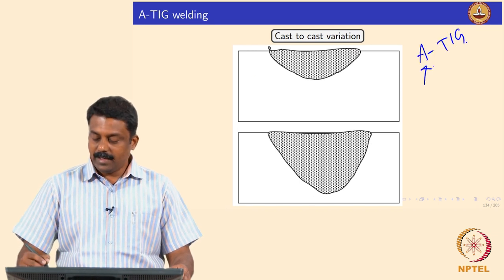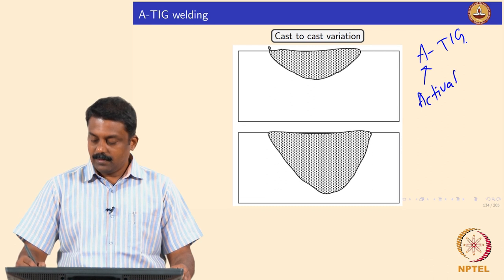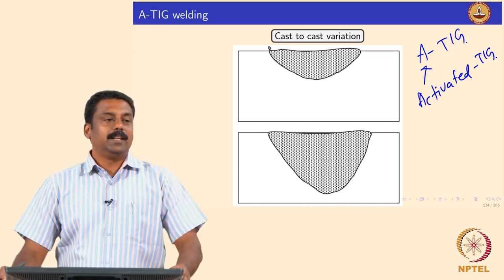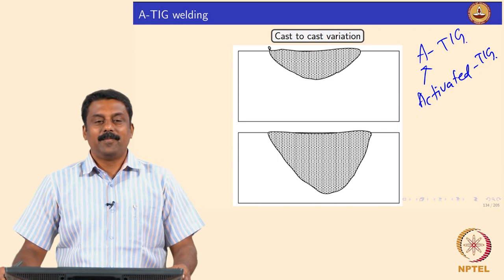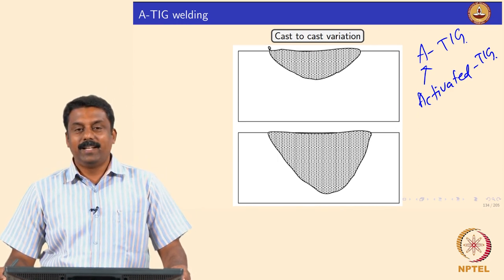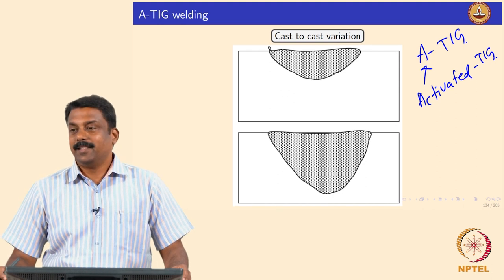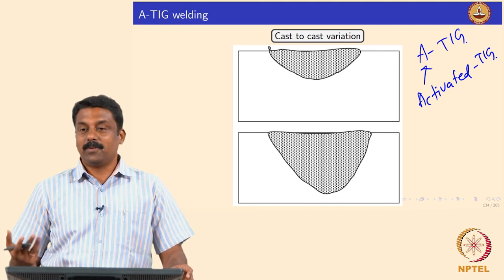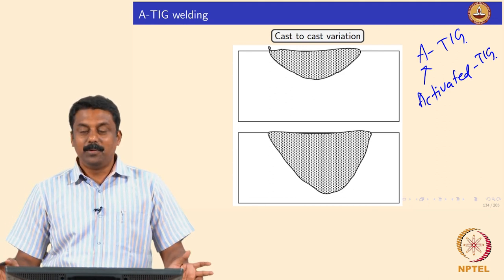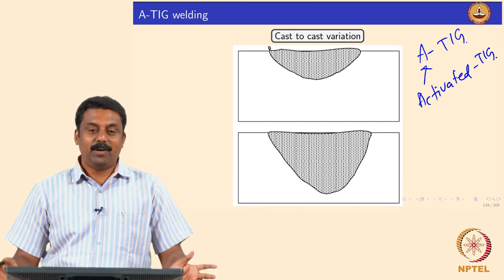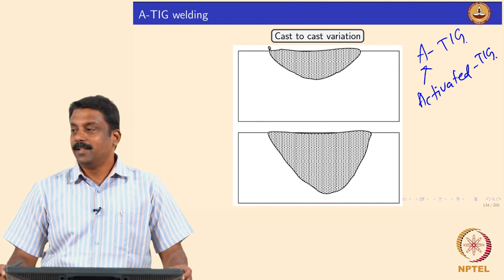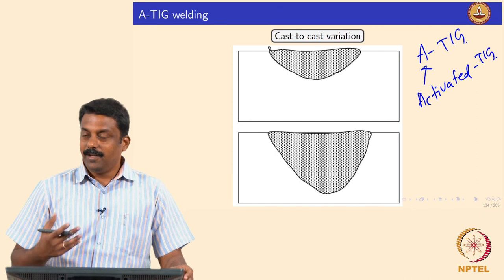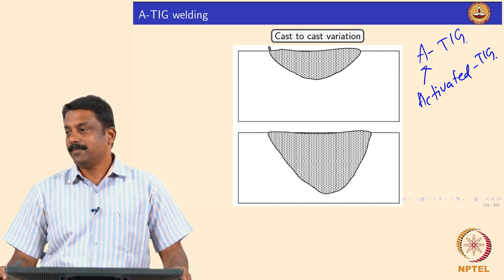ATIG stands for Activated TIG — the pool is activated. Before discussing that, metallurgically there are a lot of challenges. If you are working in a steel plant, no two microstructures are the same, no two casts are the same, you always have small variations. So even if you have a very small compositional variation, your weld characteristics can be very different.